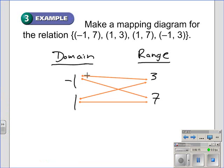Negative one is paired with seven and negative one is paired with three. Positive one is paired with seven and it's paired with three. We can see, then, negative one has two range values associated with it, and so does positive one. We can visually see that by the arrows. Two arrows leaving the negative one means it is paired with two different values.